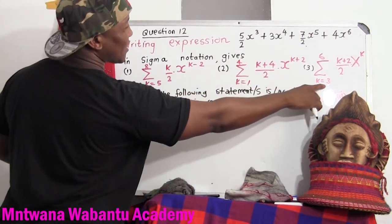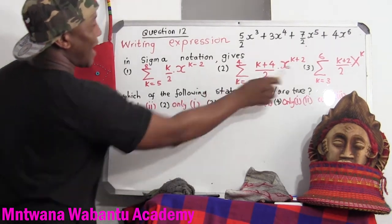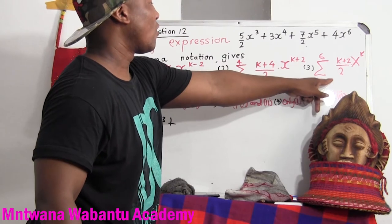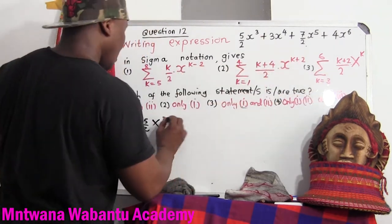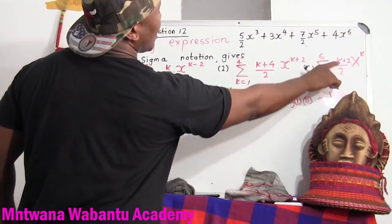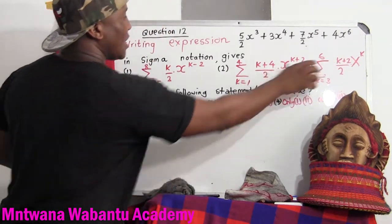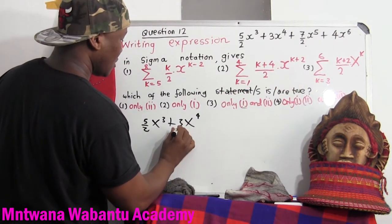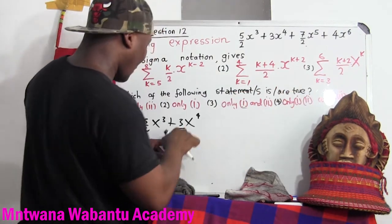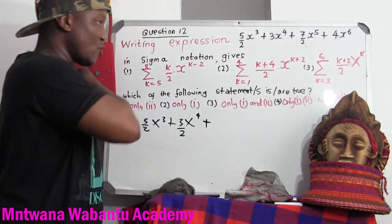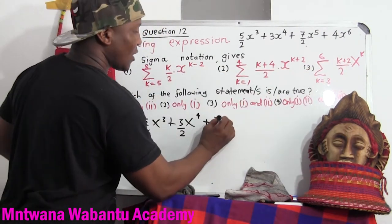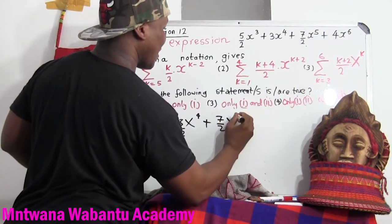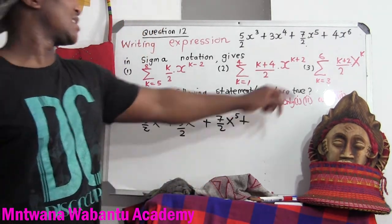For the last option, we go: k equals 3, starting from 3. So 3 plus 2 equals 5, over 2, times x to the power 3 — which is the same as before. We add because this is summation notation. Now k equals 4: 4 plus 2 equals 6, divided by 2 equals 3, times x to the power 4. Now k equals 5: 5 plus 2 equals 7 over 2, times x to the power 5 — same as that. Now the last term: k equals 6: 6 plus 2 equals 8, divided by 2 equals 4, times x to the power of 6 — which is 6.